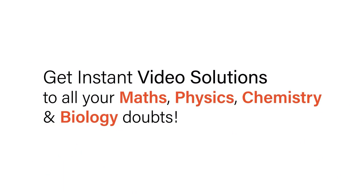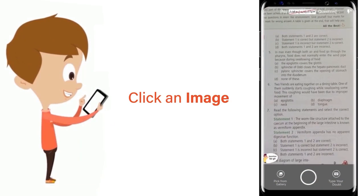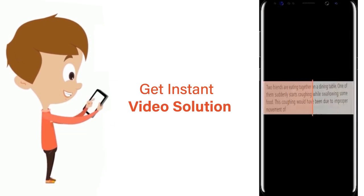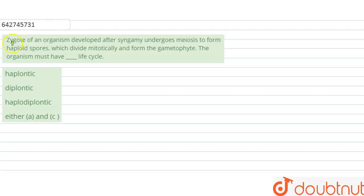With Doubtnet, get instant video solutions to all your maths, physics, chemistry, and biology doubts. Just click the image of the question, crop the question, and get instant video solution. Download Doubtnet app today. Hello, the question is about a zygote of an organism.